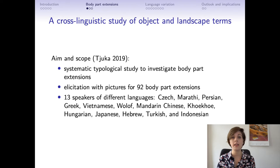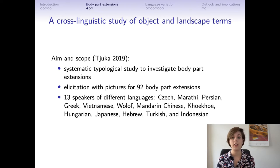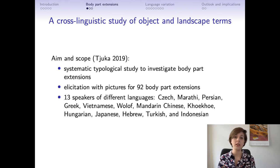In my master's thesis I did a cross-linguistic study of body part extensions to object and landscape terms, which was the first systematic typological study to investigate those body part extensions. My elicitation material consisted of pictures, and I had a list of 92 body parts illustrated in those pictures. I asked my participants whether or not they can use a certain body part for certain object features.